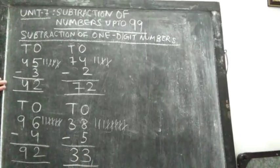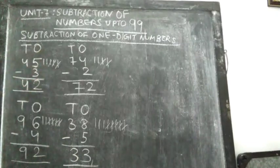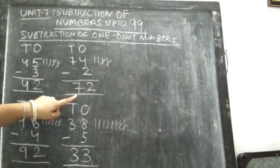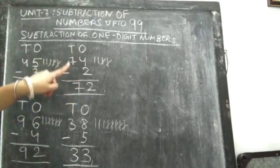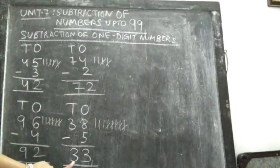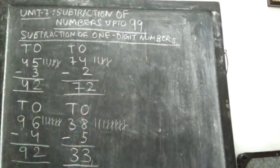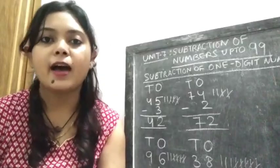So the first answer is 42 — 4 in the 10s, 2 in the 1s. See this one — the answer is 92: 9 in the 10s, 2 in the 1s. The third one is 72: 7 in the 10s, 2 in the 1s. And this one is 33: 3 in the 10s, 3 in the 1s. So like this, you have to complete the exercise in page number 99. Don't forget to do this work. That's all for today. Have a nice day all of you, and take care.